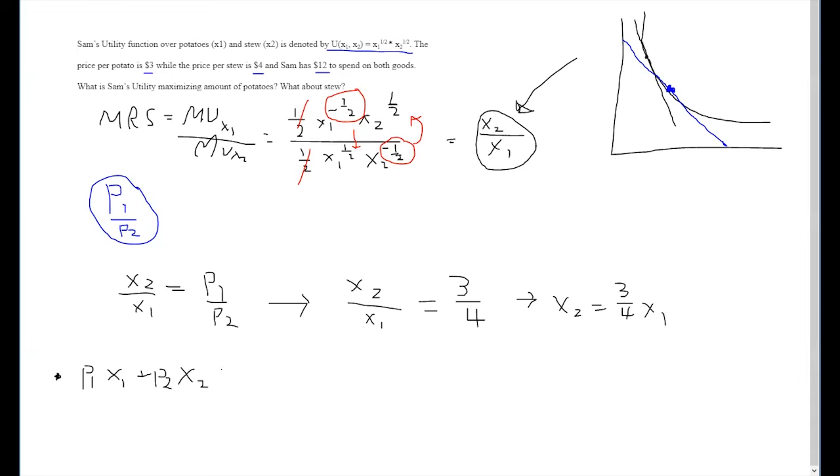In order to maximize our utility, we should be spending as much money as possible. This means the amount that we spend on both good 1 and good 2 combined should equal our income. Plugging in using the numbers we have available to us from the question, we can say 3x1 plus 4x2 equals 12.